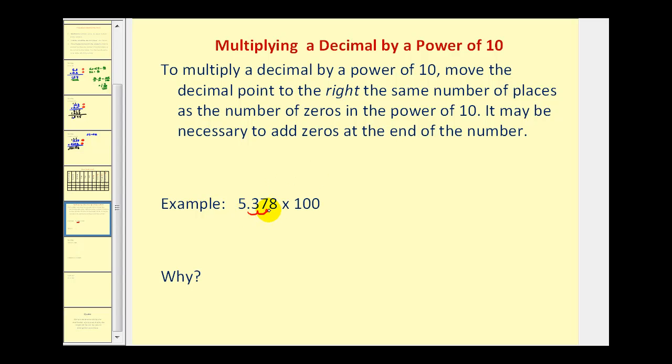If you ever get confused on which direction to move it, when we multiply by 100, the number must get larger. Therefore, it must move from left to right. So this product would be 537.8.